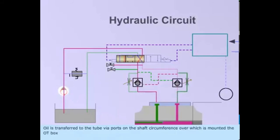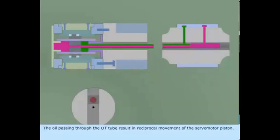Oil is transferred to the tube via ports on the shaft circumference over which is mounted the OT box. The oil passing through the OT tube results in reciprocal movement of the servo motor piston.